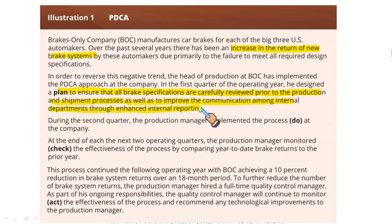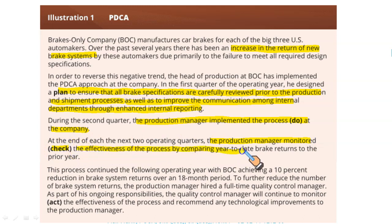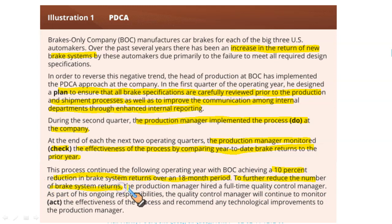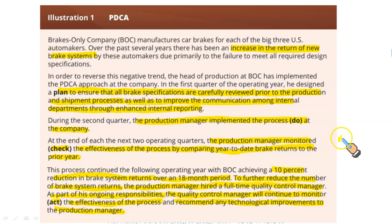The plan also aimed to improve communication among internal departments through enhanced internal reporting. During the second quarter, the product manager implemented the process to improve product quality. At the end of the next two operating quarters, the production manager monitored — checked — the effectiveness by comparing year-to-date brake returns to the prior year. This process continued into the following operating year, with BOC achieving a 10% reduction in brake system returns over 18 months.